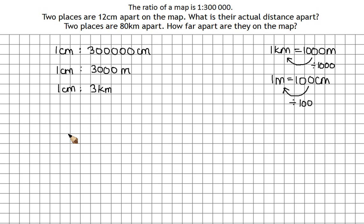So two places are 12 centimeters apart on the map. So this is when I'd use this notation to help you remember which is which. So, on the map, 1 centimeter is 3 kilometers.